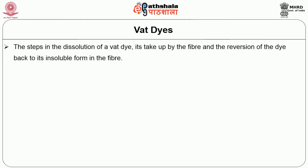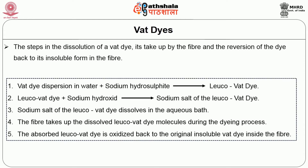The steps in dissolution of vat dyes are as follows: vat dye dispersion in water with sodium hydrosulfite forms the leuco vat dye; then the leuco vat dye is reacted with sodium hydroxide to form the sodium salt of the leuco vat dye; the sodium salt of leuco vat dye is dissolved in the aqueous bath to enable dye-fiber interactions; finally, the absorbed leuco vat dye is oxidized by air oxidation or chemical oxidation to revert back into the insoluble vat dye in the textile material.